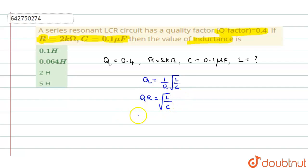Now squaring on both the sides, you get Q square R square is equal to L by C. And from this, L will be equal to Q square R square into C, right? So in this, you will substitute all the values now to get the value of inductance.